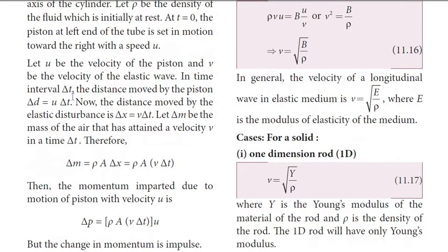In a time interval delta-t, the distance moved by the piston is u times delta-t. So displacement equals u into delta-t, using the formula: velocity equals displacement divided by time, therefore displacement equals velocity times time, which gives u into delta-t.